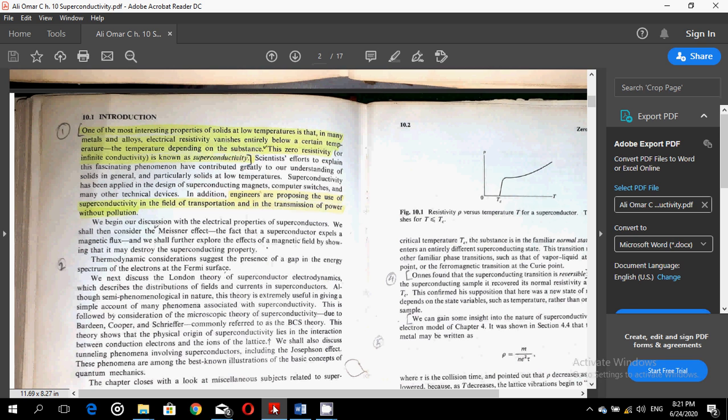Thermodynamic consideration suggests the presence of a gap in the energy spectrum of the electron at the Fermi level. Next, we will discuss the London theory of superconductivity, superconductors, electrodynamics, which describes the distribution of fields and currents in superconductors.